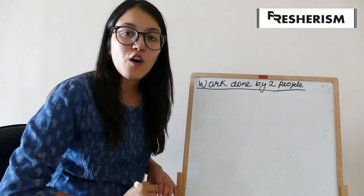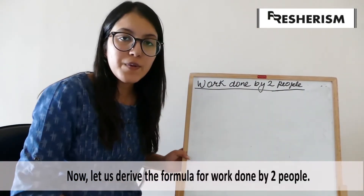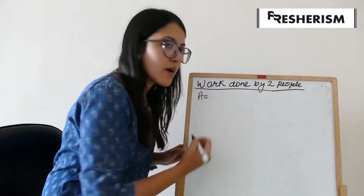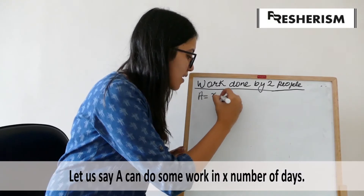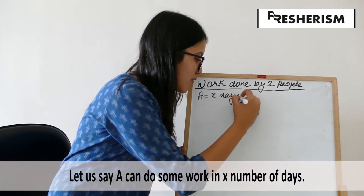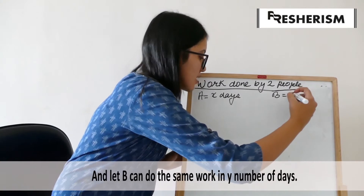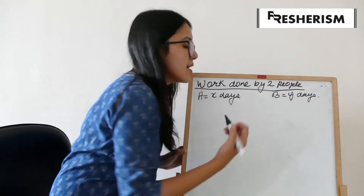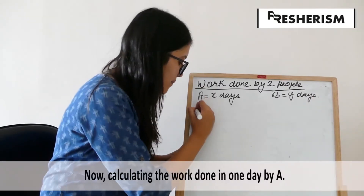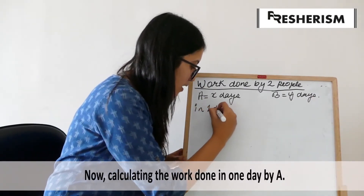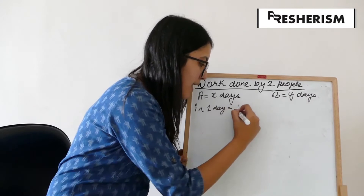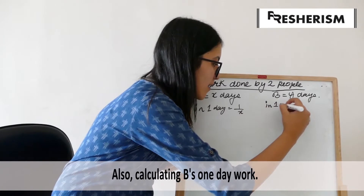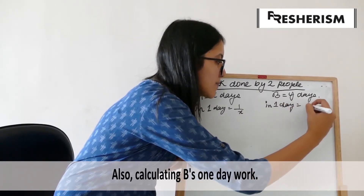Let us now understand the formula of work done by two people. It is considered that A can do a certain amount of work in x number of days, whereas B can do the same amount of work in y number of days. Therefore, the work done by A in one day will be 1 by x. Similarly, work done by B in one day will be 1 by y.